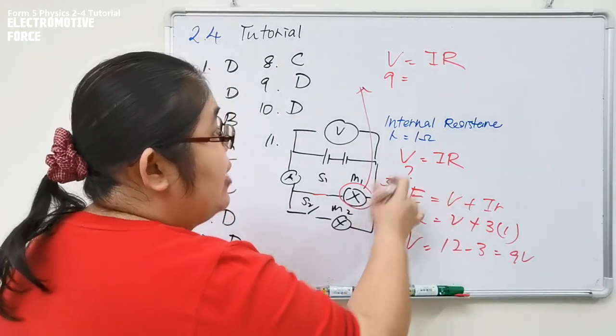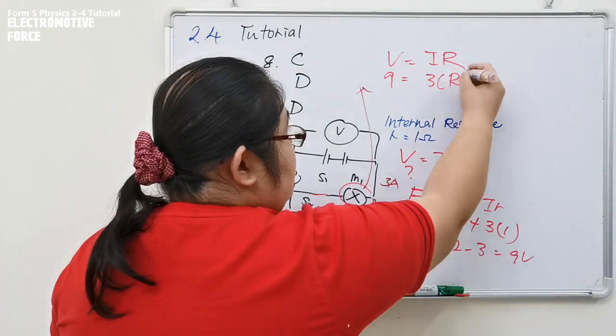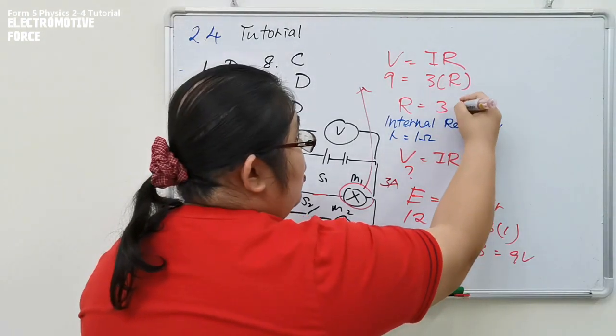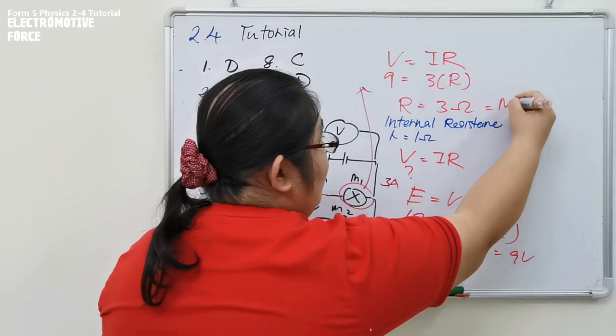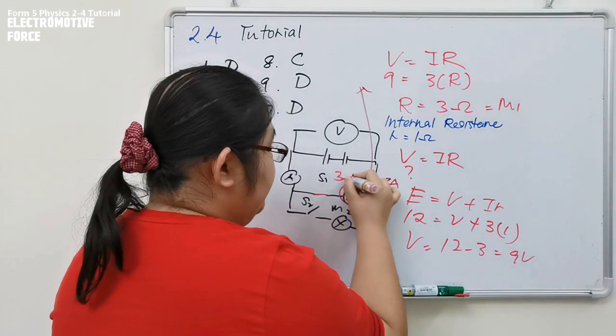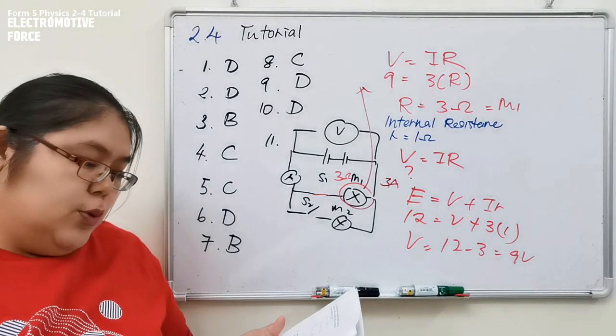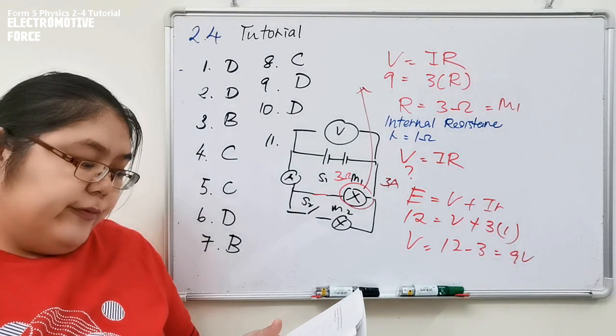Current is 3 ampere. So R becomes 9 over 3, that's 3 ohms. So this one is M1, we know this one is 3 ohms. So we solved B1 and B2.